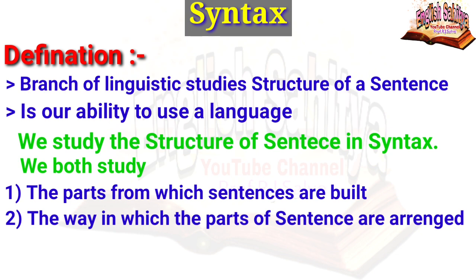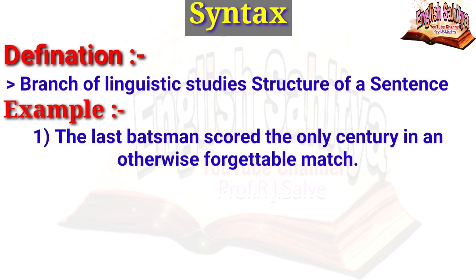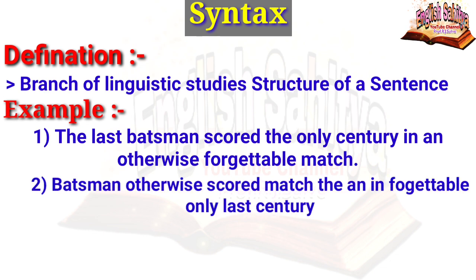Let us begin with an example. First example: 'The last batsman scored the only century in an otherwise forgettable match.' This sentence is made up of words in a meaningful order. Now if we were to jumble up the words we get something like: 'batsman otherwise scored match the the and in unforgettable only last century' — marked with an asterisk in linguistics to indicate an ungrammatical sentence. This is clearly ungrammatical and almost impossible to understand.